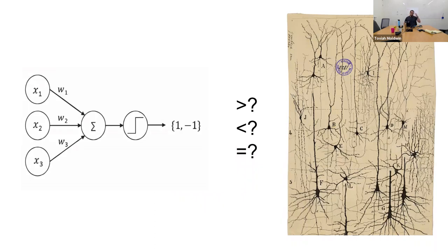I am interested in a similar question to what you at Numenta are all interested in. We have these linear neurons that people use in machine learning and artificial neural networks. You have your inputs — the x's — you multiply each input by a synaptic weight — the W's — you sum up the weighted inputs, pass them through a threshold function, and the neuron returns either a spike or no spike. You put together big networks of these neurons and that's how you get deep neural nets.